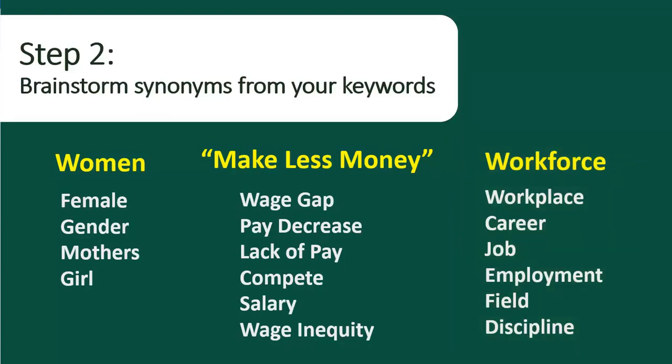After you brainstorm more keywords, pick out the terms you think best describe what you want to research. Remember, it can be a trial and error process, so try out different combinations of the other terms if you don't find what you're looking for. For example, if I try 'women,' 'wage gap,' and 'career' and I don't like the results I see, I might try 'women,' 'wage gap,' and 'employment' instead.